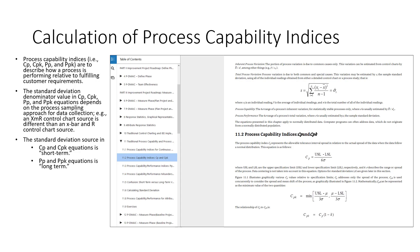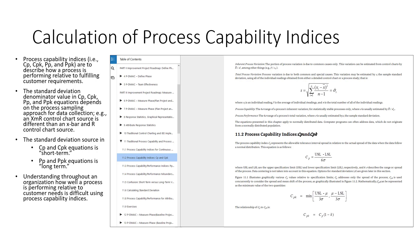We need to keep in mind that CP and CPK equations use short-term variability, while PP and PPK equations use long-term variability for standard deviation. Understanding throughout an organization how well a process is performing relative to customer needs is very important, but it's difficult to actually accomplish with process capability indices.